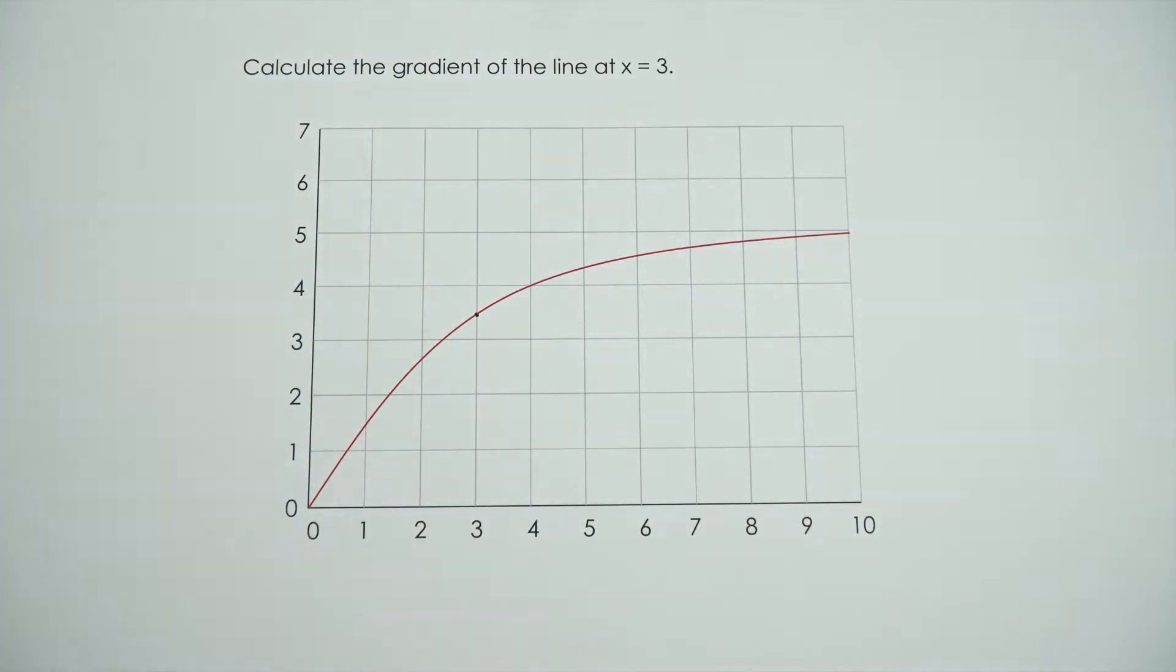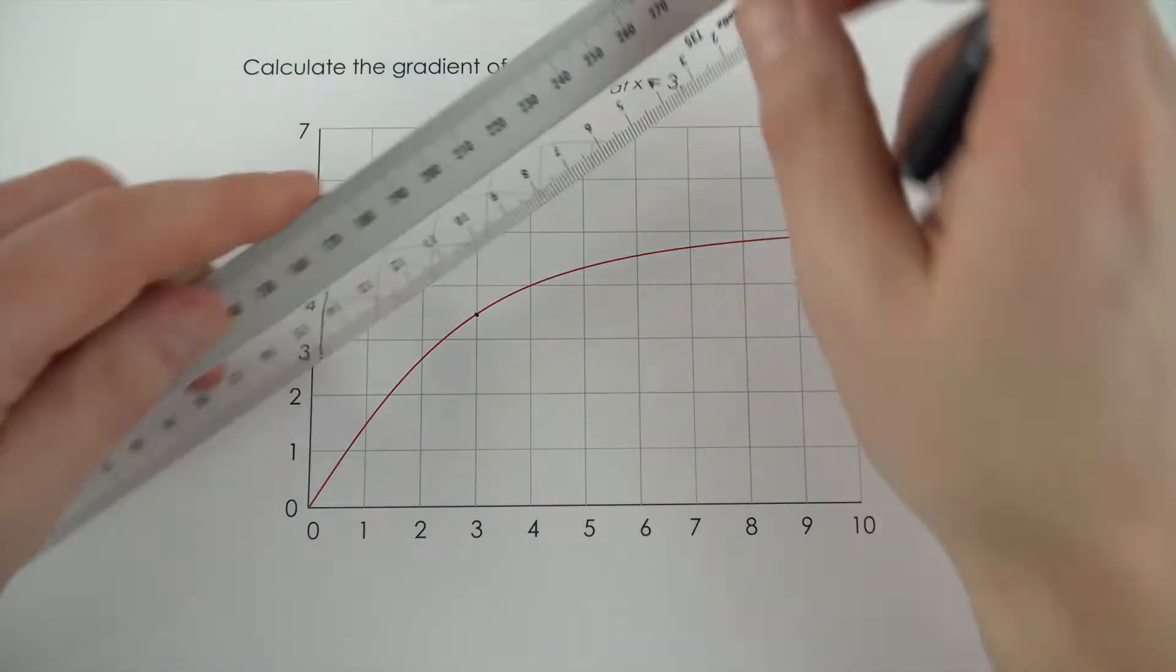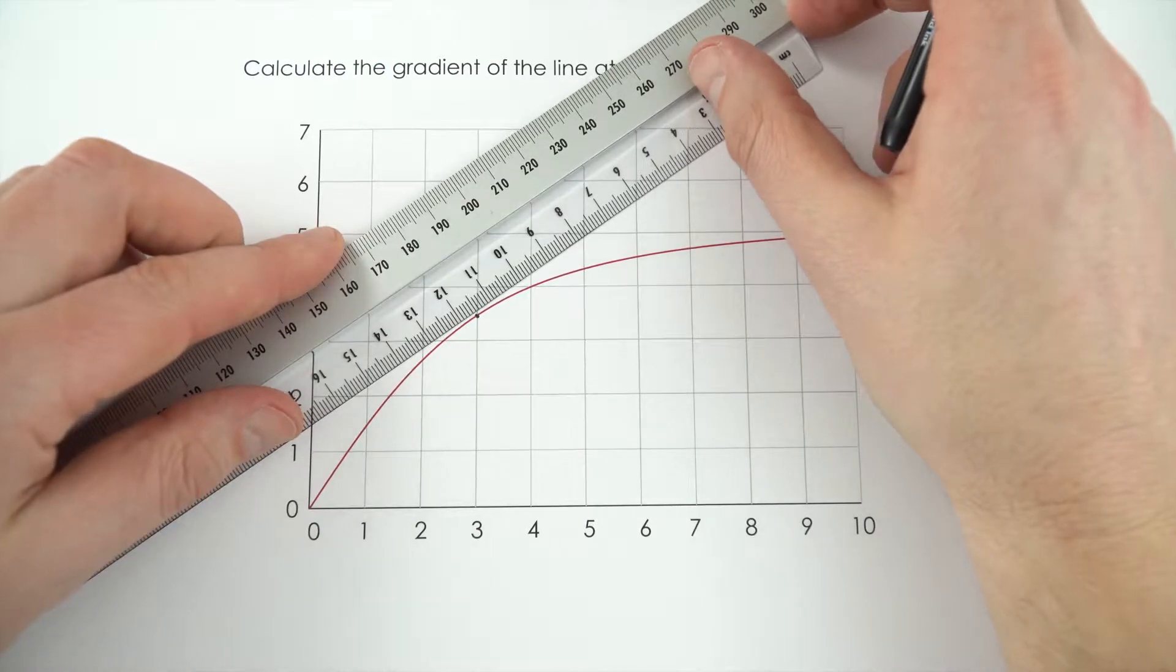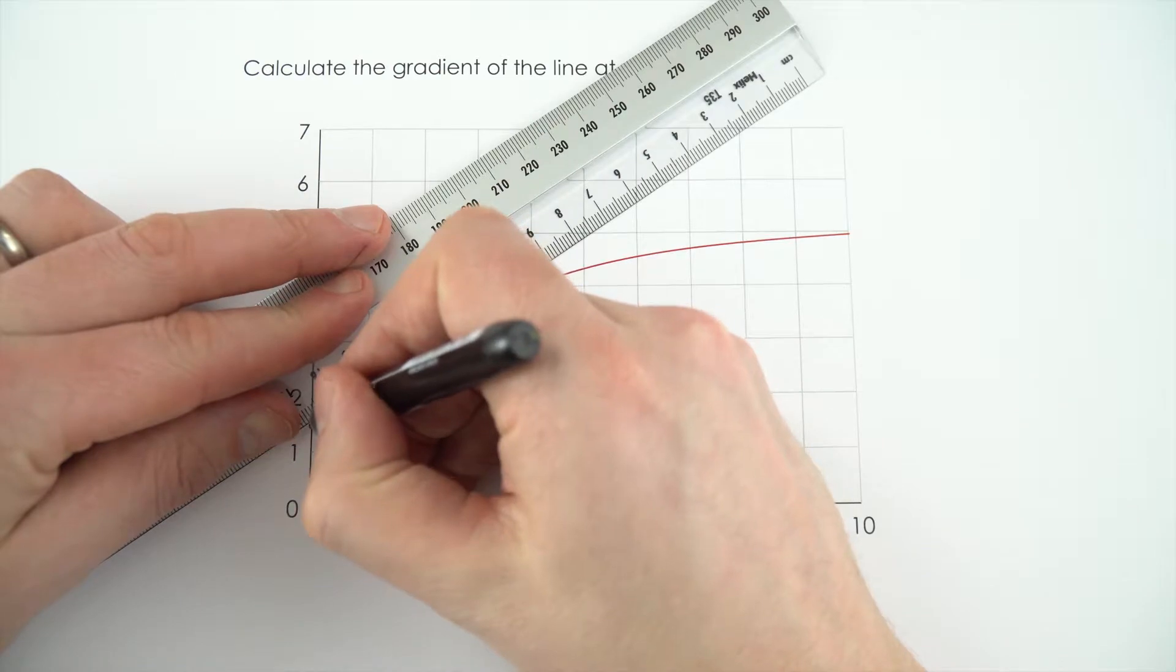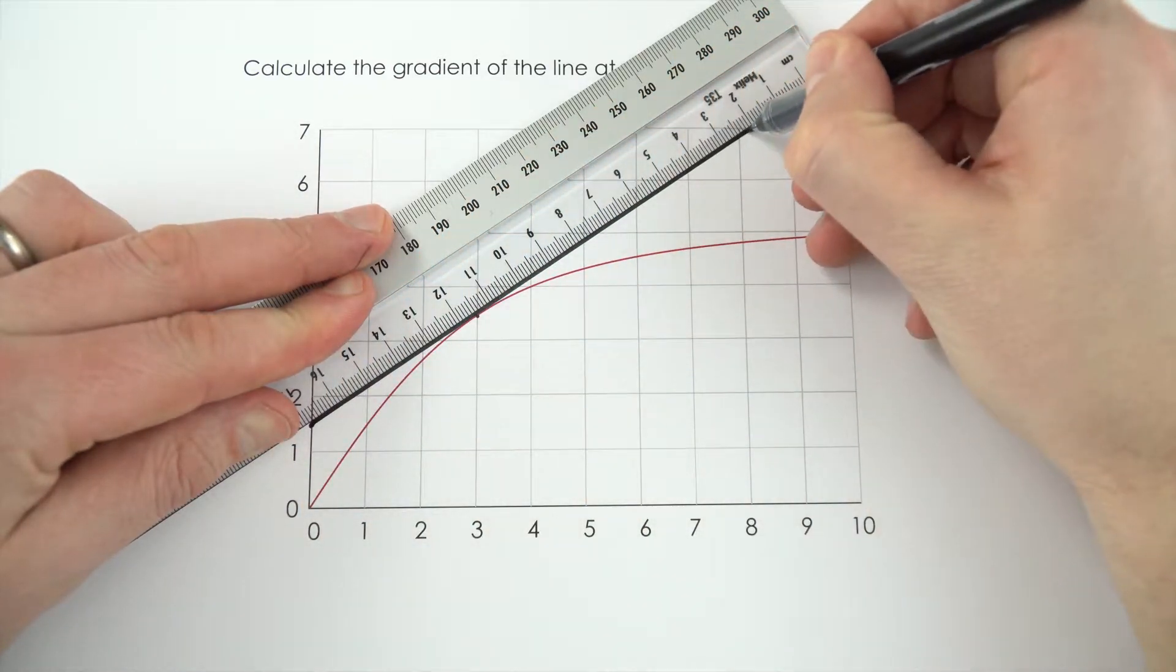So I'm just going to get my ruler, and I'm going to draw a tangent to this. I'm just going to sort of do this by eye, and I think something like that looks pretty good. So I'm just going to draw in my line like so,